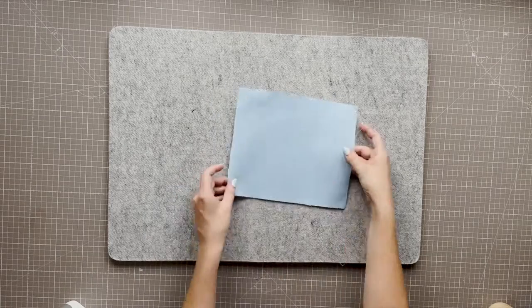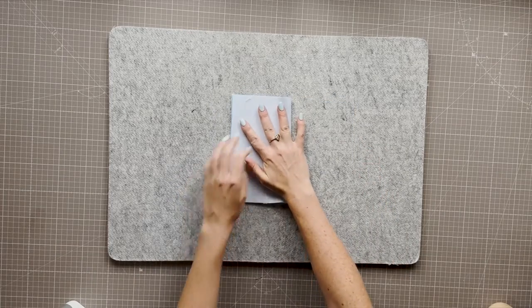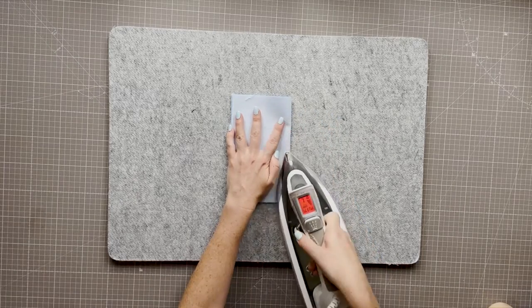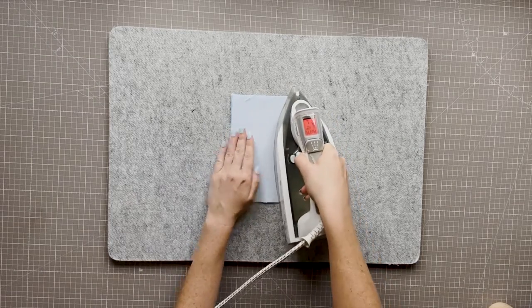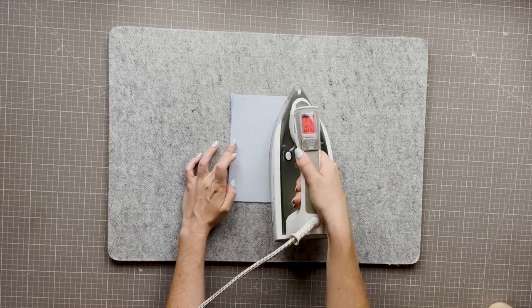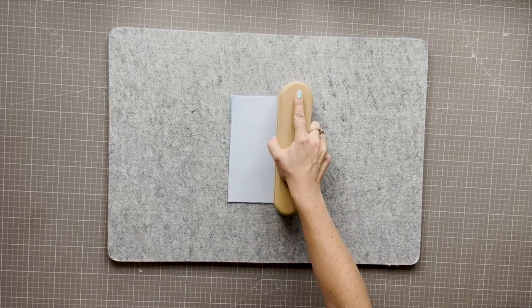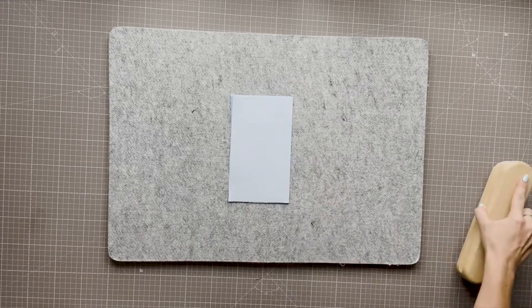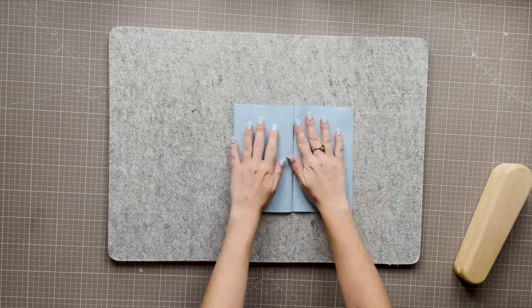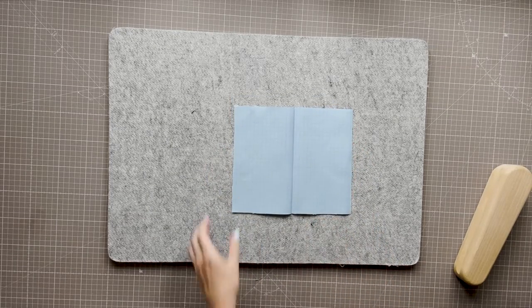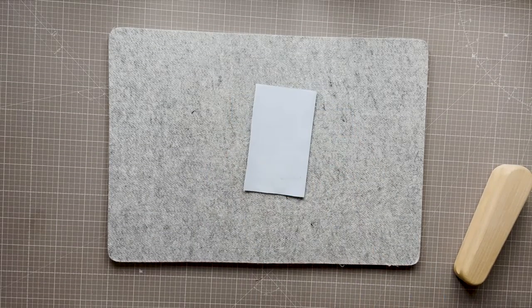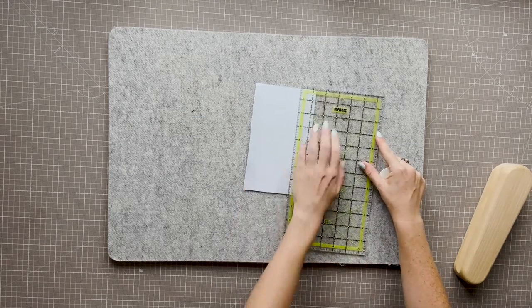To begin you may wish to interface your fabric for strength and stability if it's quite thin. I prefer a woven fusible interfacing. We'll form the pleat first and to get a perfect centre press the pocket in half right sides together. Throughout this project use a clapper to get sharp edges if you have one. A wooden spoon can do the trick in a pinch.